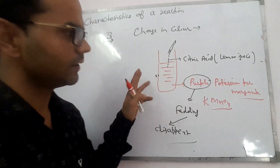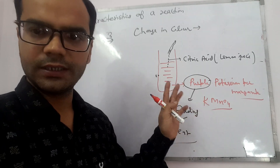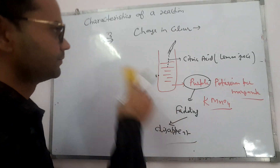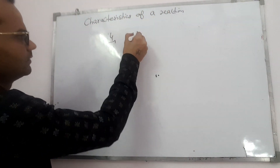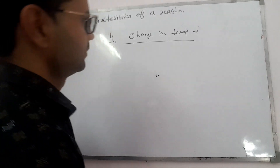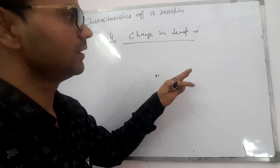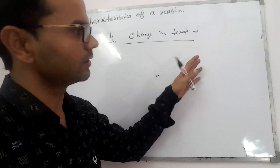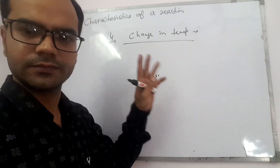Both previous examples also show a change in color. Now let's move to the fourth characteristic, which is change in temperature. Some reactions release energy — those are called exothermic reactions — and some reactions require energy, called endothermic reactions. We will discuss these again, but now let's understand with an example.